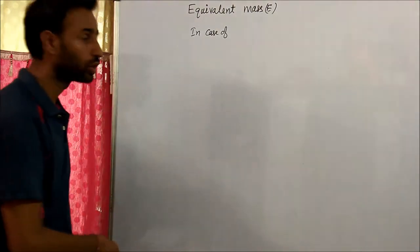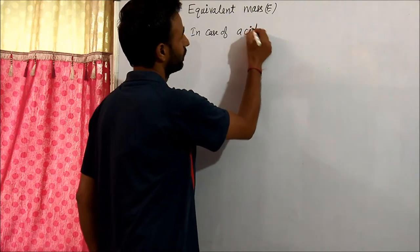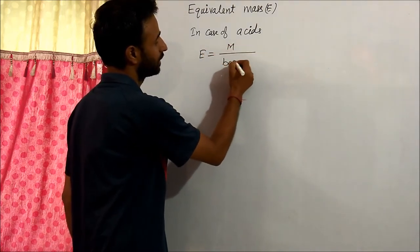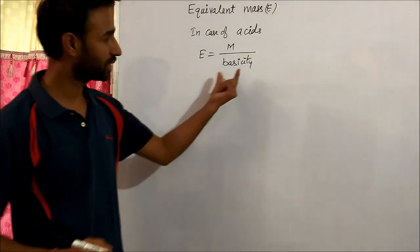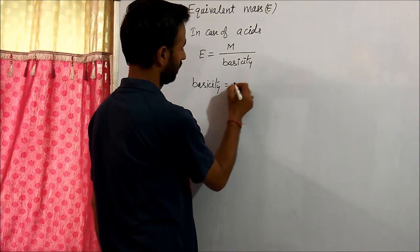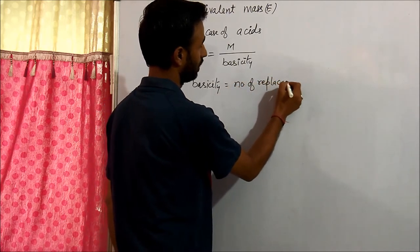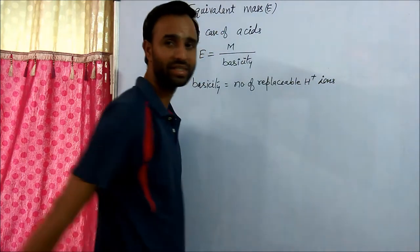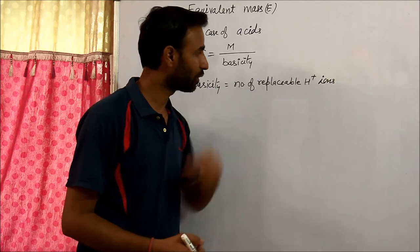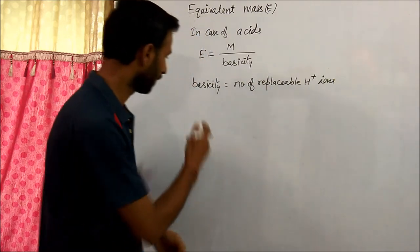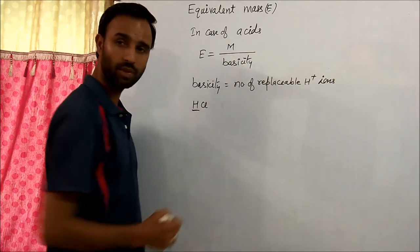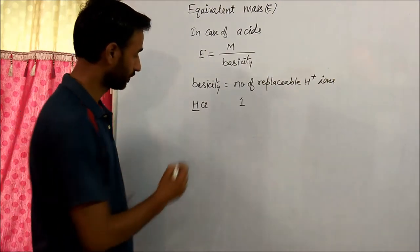In case of acids, equivalent mass is equal to molar mass divided by basicity. Basicity is the number of replaceable H⁺ ions — those which can be removed as H⁺ ions. For example, HCl gives only one H⁺, so its basicity is 1.